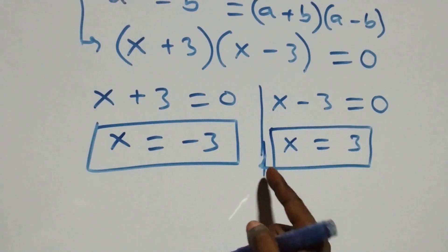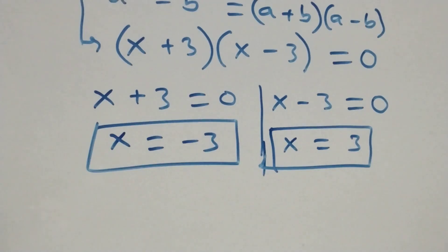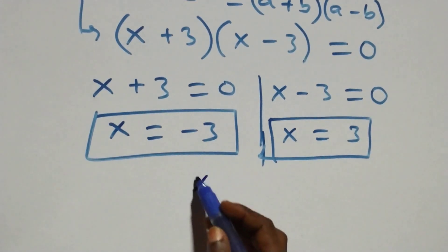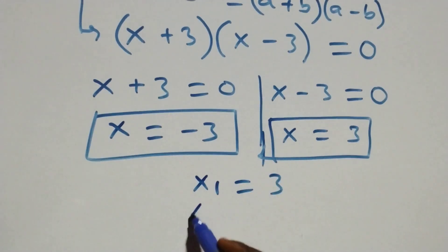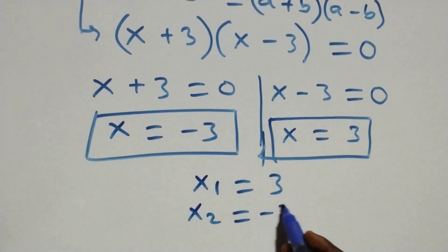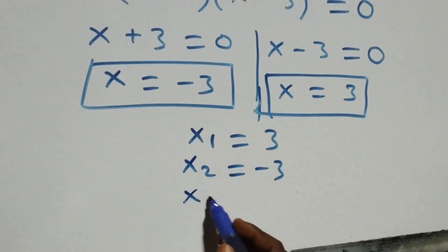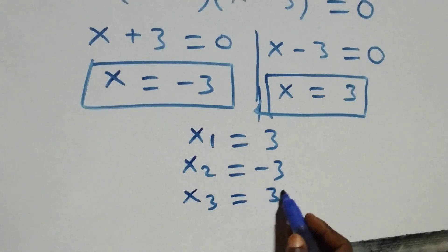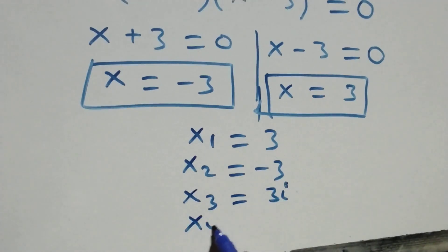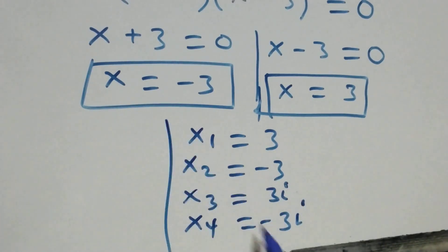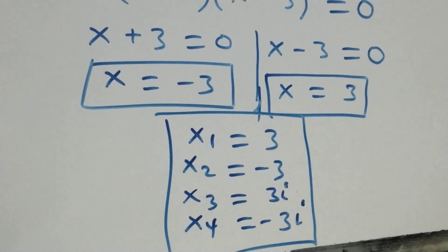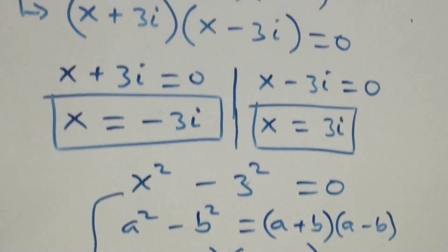So we have two real solutions, and altogether we have four solutions — two real and two complex. Writing them out: x₁ equals three, x₂ equals minus three, x₃ equals 3i, and x₄ equals minus 3i. Now let's check whether these satisfy the original problem.